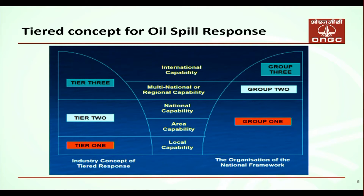The tiered concept of oil spill response is the basic framework depending upon the quantity of oil spilled. Tier 1 caters to the requirement of local capacity — where the oil spill is minor in size, maybe up to 700 metric tons — and can be tackled at the local level itself.